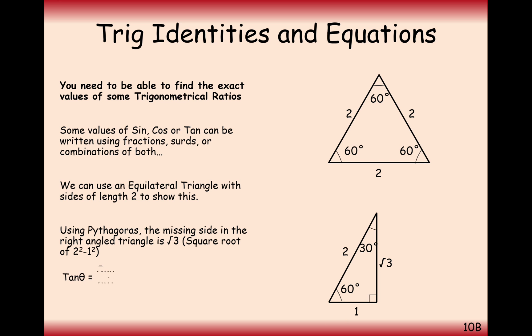For tan, it's going to be opposite over adjacent. So for the 30 degrees here, it's going to be opposite, which is 1 over adjacent, which is root 3. So that's 1 over root 3, which we can simplify to root 3 over 3 by rationalising the denominator.